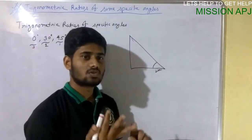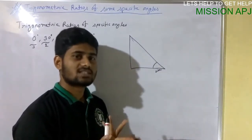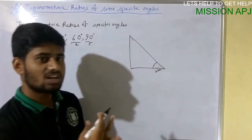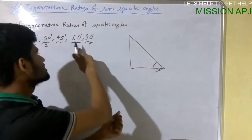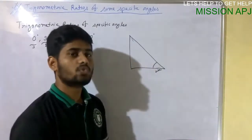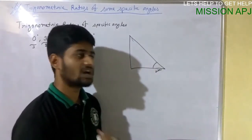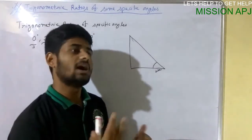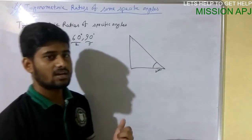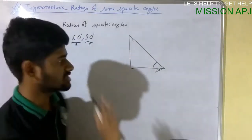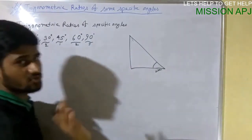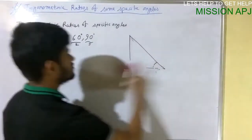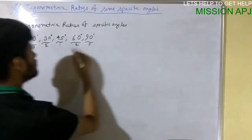The ratios to find are sine, cos, tan, cosec, sec, and cot — so sine 0°, sine 30°, sine 45°, sine 60°, sine 90°, and similarly for the other five ratios. These six trigonometric ratios we have already discussed in the previous lecture. Now let us start. First we are going to find the trigonometric ratios of 45°.